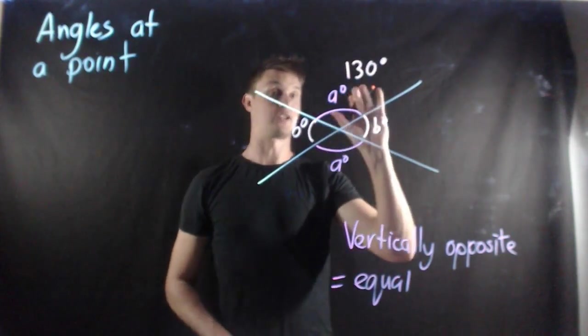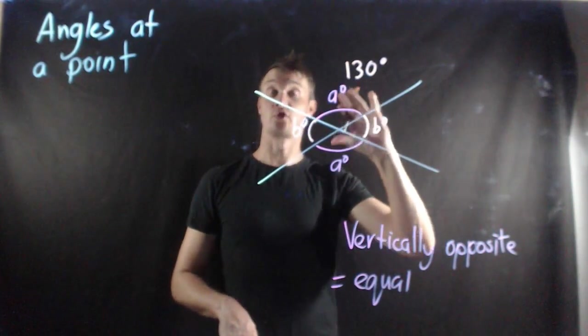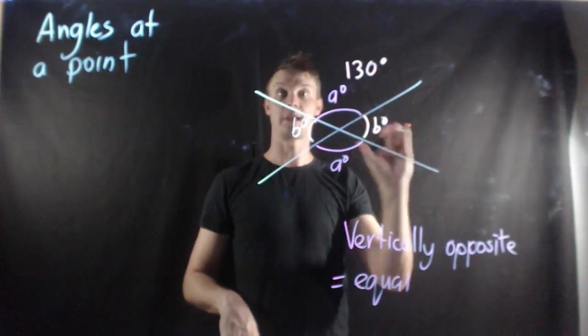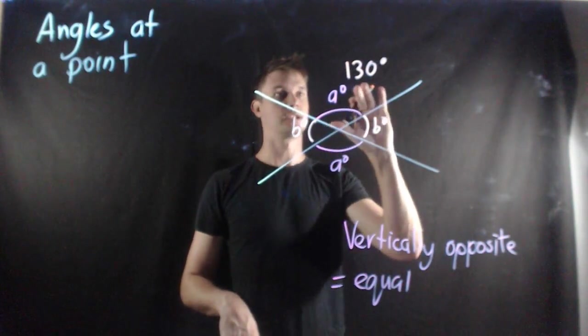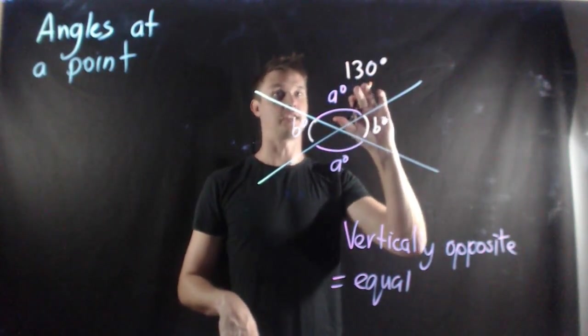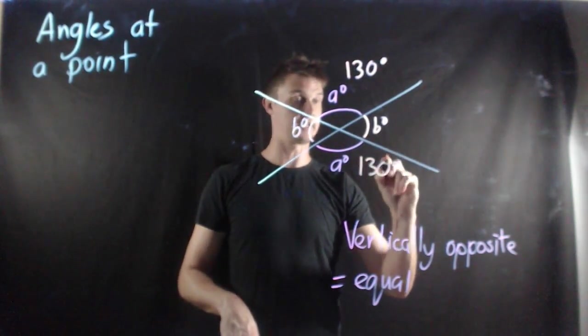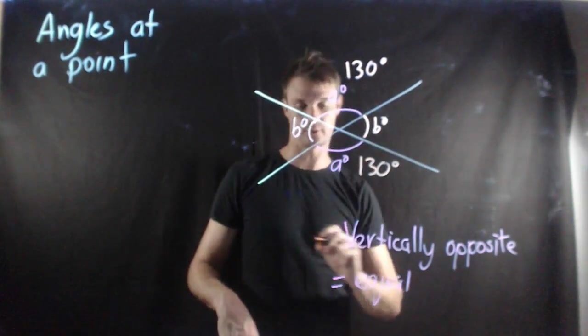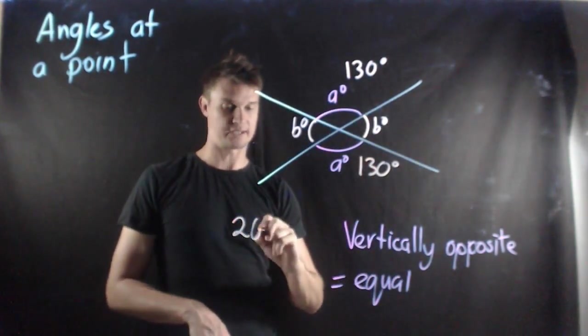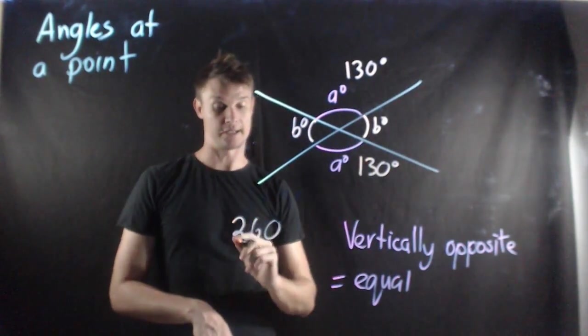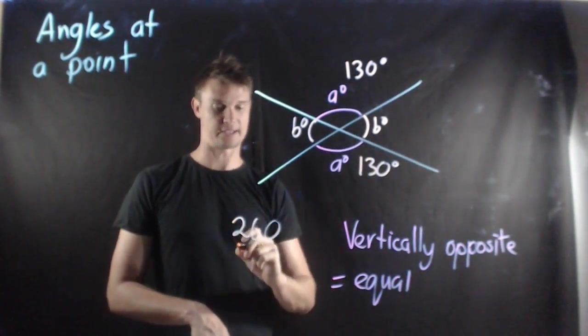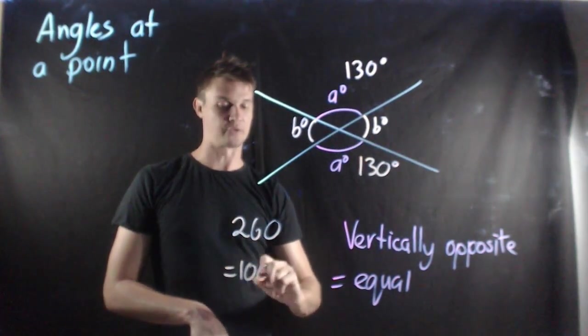So if I discovered that angle A was 130, now what I should be able to do knowing revolution and knowing the rest, I should be able to work out the rest of these missing angles. If this is 130, I know that vertically opposite will also be 130 degrees. So that makes these two angles 260. Now this is a full revolution so I need to subtract that from 360 which will leave me with 100 left.